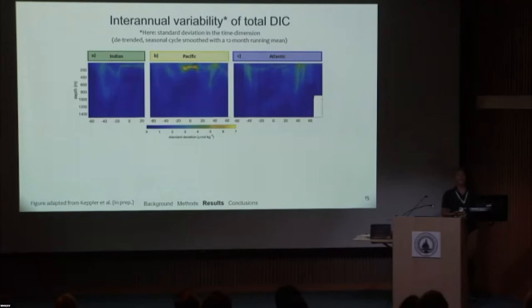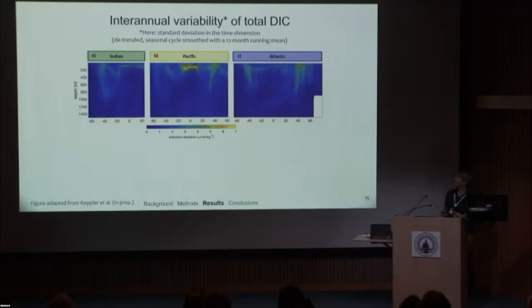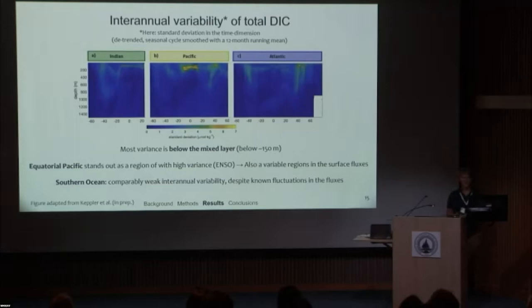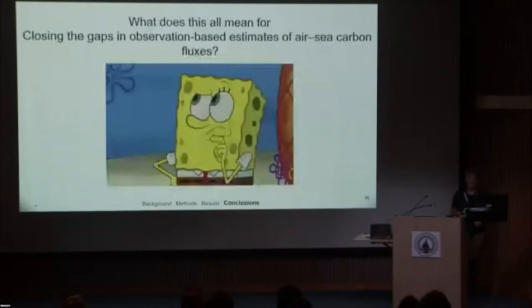We also looked at the interannual variability of DIC, defined as the standard deviation in the time dimension, with the seasonal cycle and trend removed. Generally, we don't find much interannual variability. The most pronounced variations are in the tropical Pacific just below the thermocline — very strongly linked to ENSO. In the Southern Ocean, we find very little interannual variability, very close to zero — which was a bit of a surprise, because we know from surface fluxes that there's a lot of variation there.